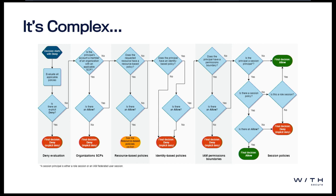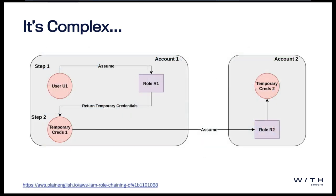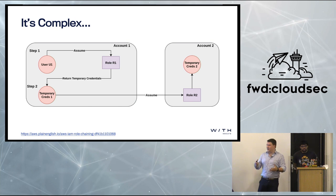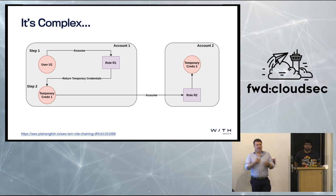I think AWS probably has the most complicated model of different places you can approve or deny an action of the providers that I've seen. There's a seven-step flowchart straight out of the AWS documentation. When you then combine that with role assumption, especially role chaining — which was flagged in the previous talk as an area that a lot of AWS's own tools don't really cover terribly well — a lot of this gets really complicated. Trying to reason about what a particular user or system can do across an AWS estate of a few hundred accounts becomes incredibly challenging.